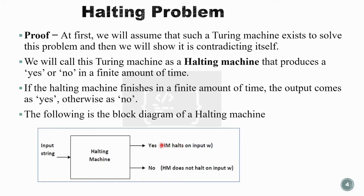This is the diagram of the halting machine, HM. The input to HM is a Turing machine description and an input string. It determines whether that Turing machine halts on the given input. If yes, our halting machine produces a yes output. If the Turing machine does not halt on input W, then HM produces a no.